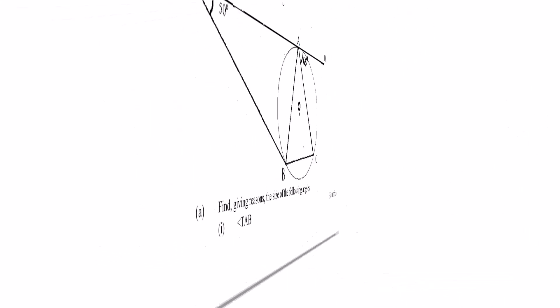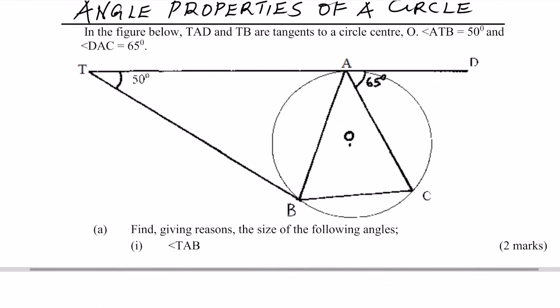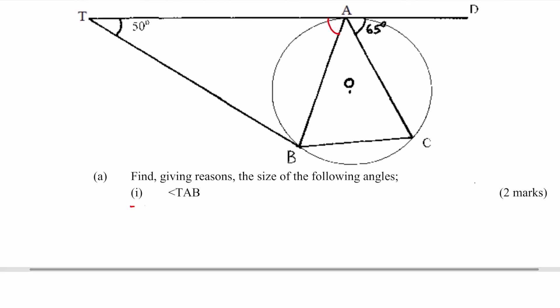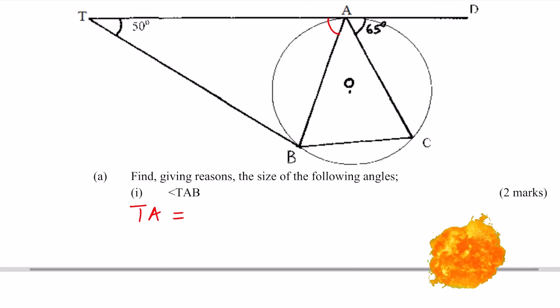Let's find angle TAB. TAB is the angle indicated in the diagram. The property we are going to use here involves tangents TA and TB. Those two tangents are equal.